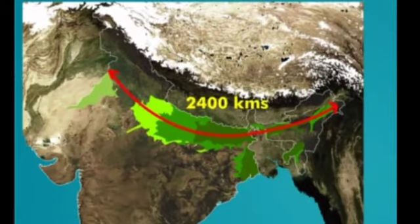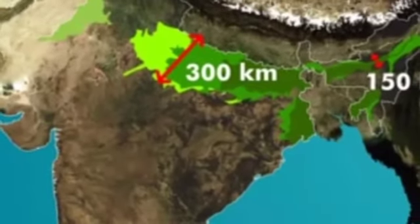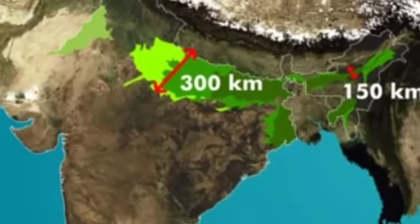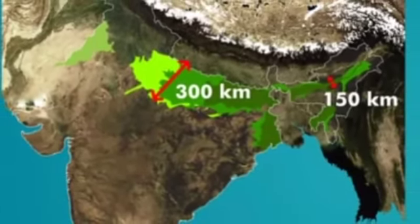The Great Northern Plains are formed due to the depositional work of three major river systems: the Indus, the Ganga, and the Brahmaputra. The plains account for 2400 kilometers in length, and the width ranges between 150 to 300 kilometers.